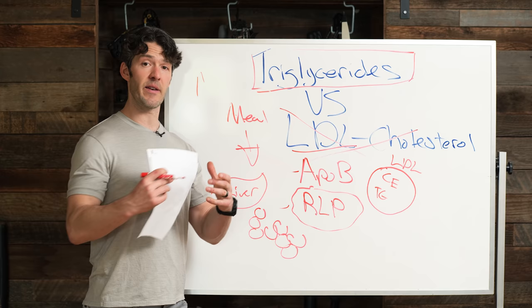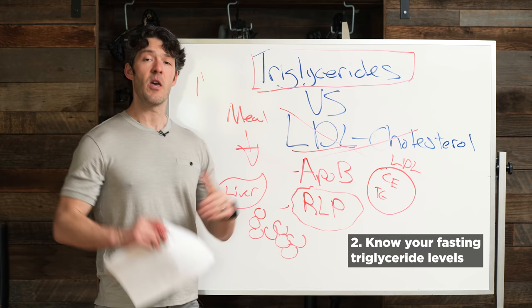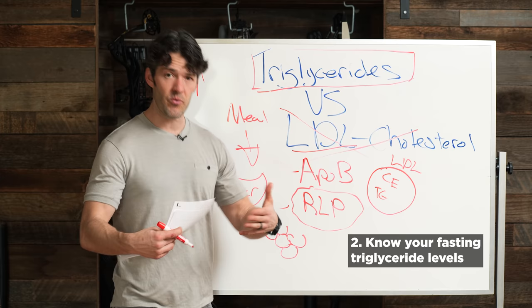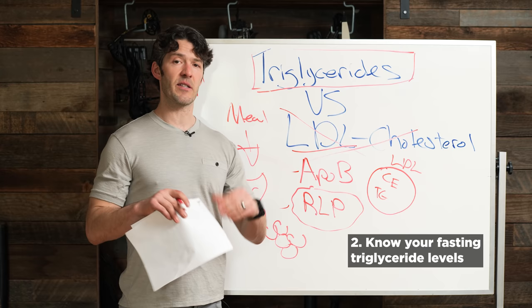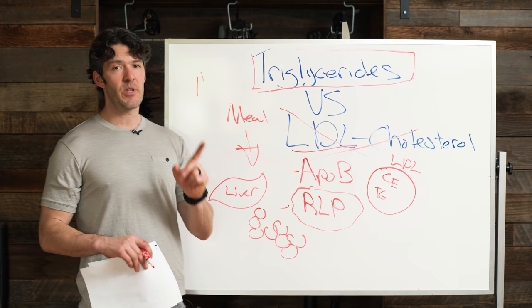Big point number two, you need to know your fasting triglyceride levels. Once you know that on your next labs, it could be a year later, 12 months later, six months later, if you're really being proactive, you can then have a mixed meal that has between 60 and 80 grams of fat and see what your post-meal, your non-fasting triglyceride levels are at. If they're north of 200, you need to make some improvements, which is where we're going to focus on right now. What are those improvements?